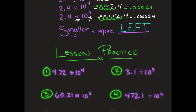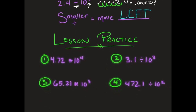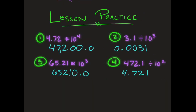Here are some lesson practice problems. Pause the video, try them yourself, then hit play to see if you got your answers correct. Remember: if you were multiplying, you were getting bigger; if dividing, you were getting smaller. Check your exponent to see how many times to move the decimal point — you're not just adding zeros, you're moving the decimal point to its new location.